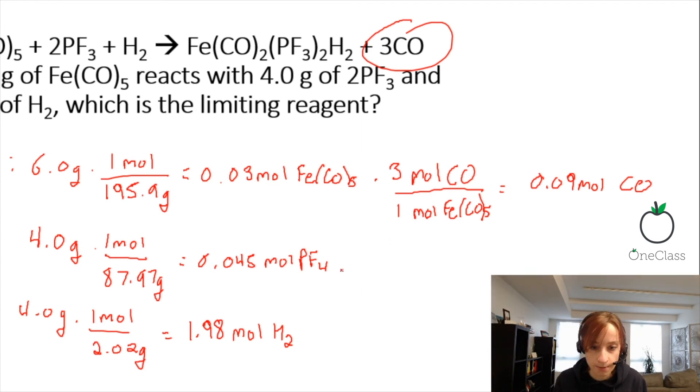We're going to follow the same calculation using carbon monoxide as our product, as our point of reference. We're going to do that for all three reactants. So 3 moles of carbon monoxide gives 0.0675 moles of carbon monoxide for 2 moles of PF3. So double check your coefficients for sure. And 1 mole of H2. So then that gives me 5.94 moles of CO.